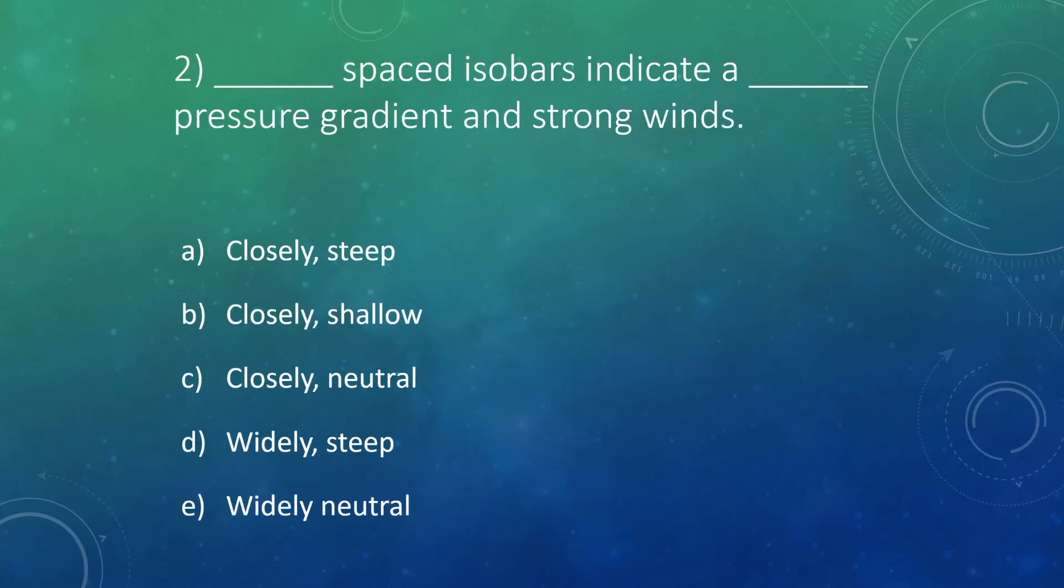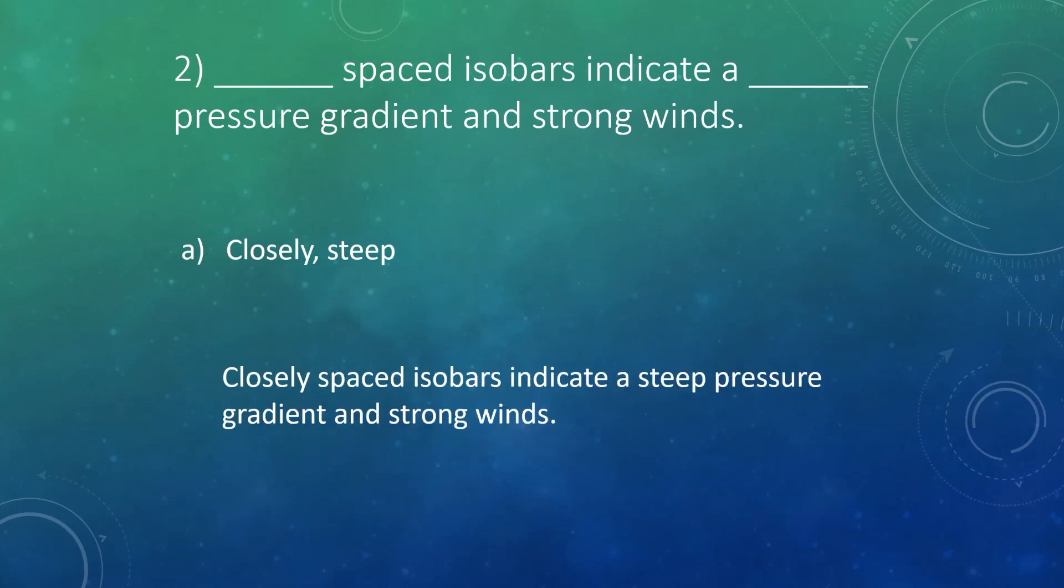Number two, blank spaced isobars indicate a blank pressure gradient and strong winds. Okay, so the answer here is that closely spaced isobars indicate a steep pressure gradient and strong winds. So remember, the closer together those lines are, the stronger the winds are.